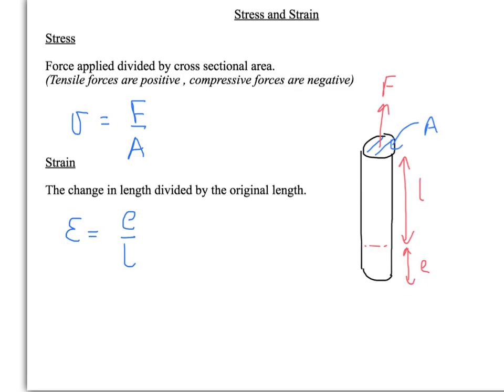Stress is the force applied divided by the cross-sectional area on which the force is applied. Tensile forces are regarded as positive, so stretching forces are positive, and compressive forces are negative. Stress is given the symbol shown here, and is force divided by area, which means it has the unit of newtons per metre squared, or newtons per metre to the minus two.